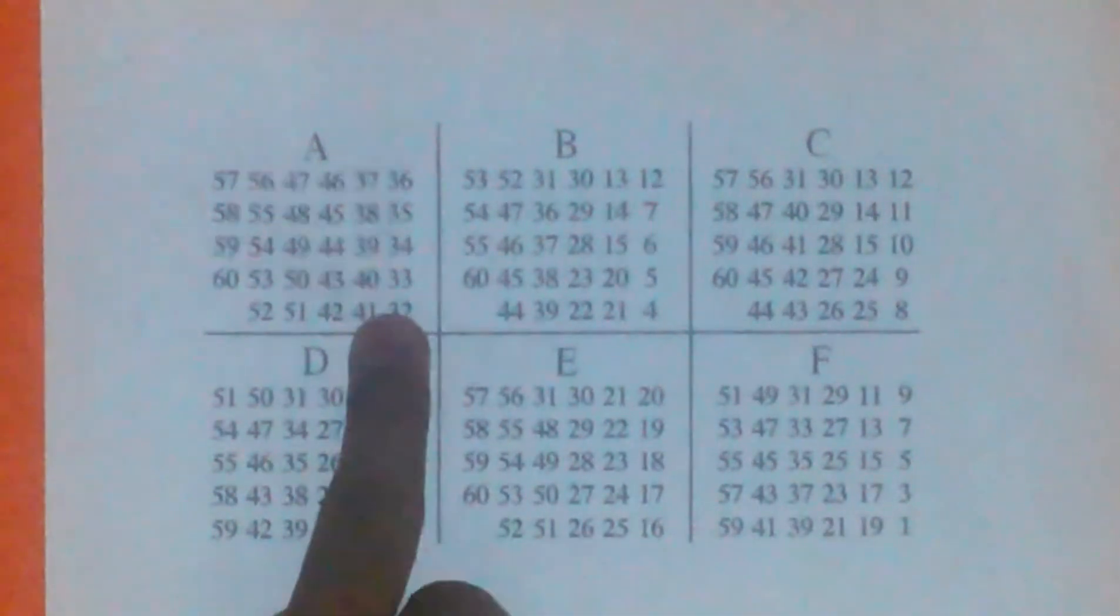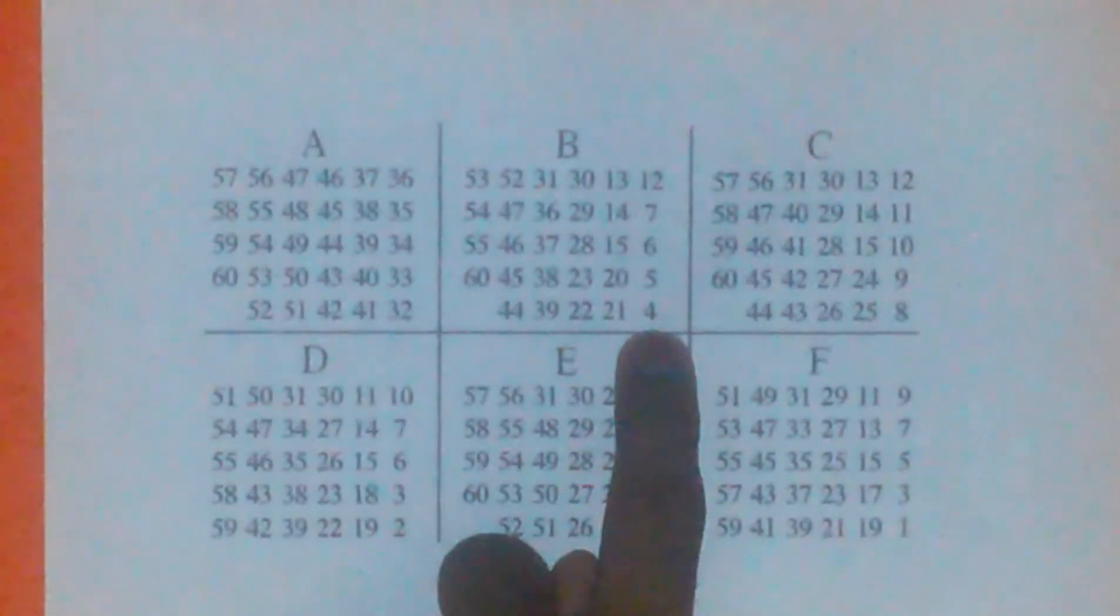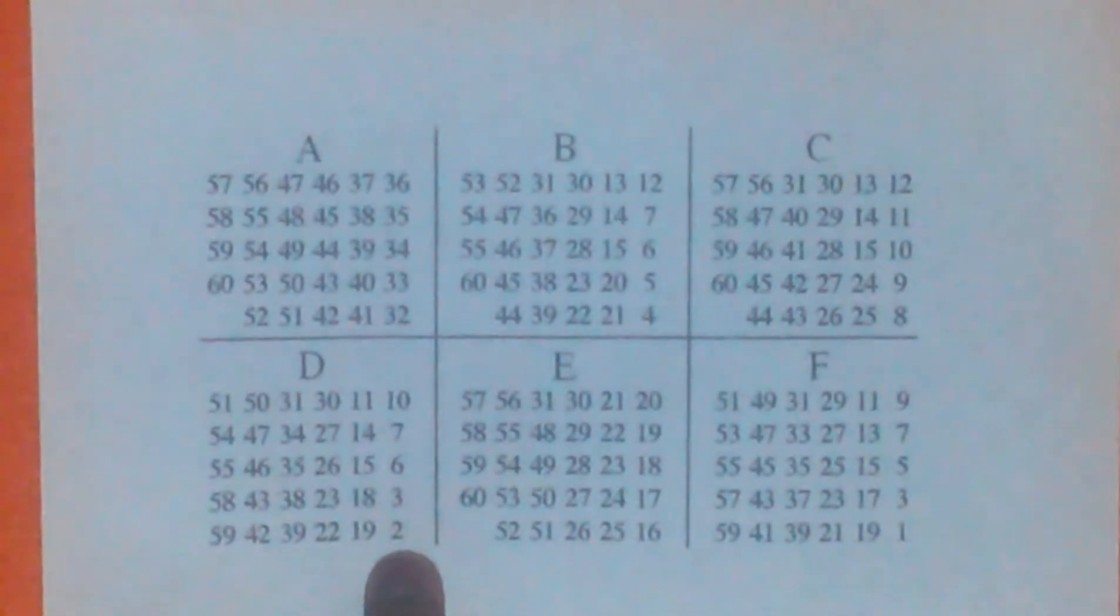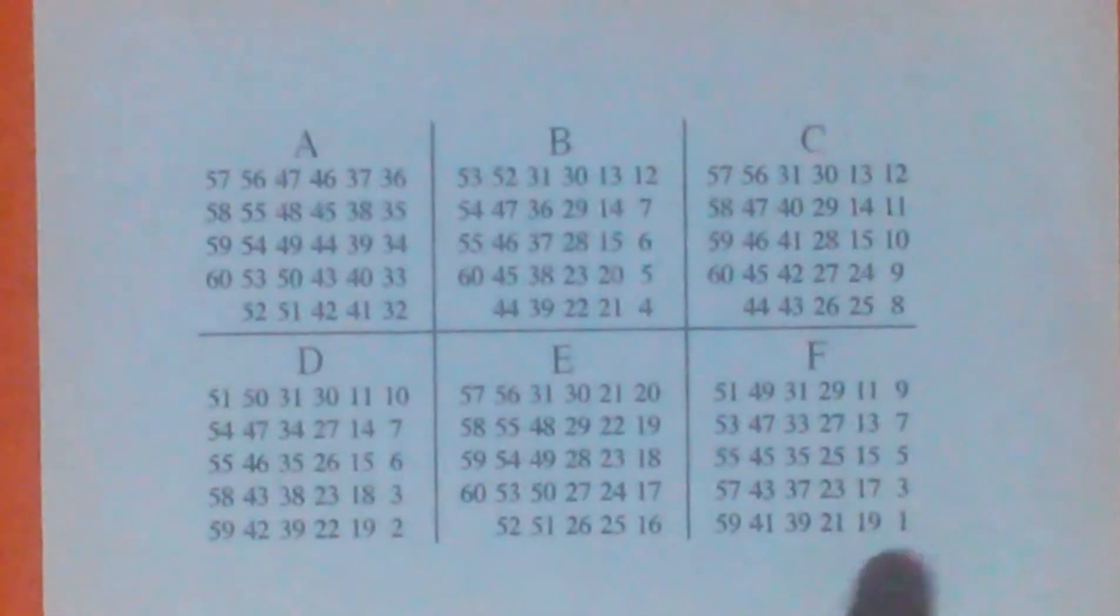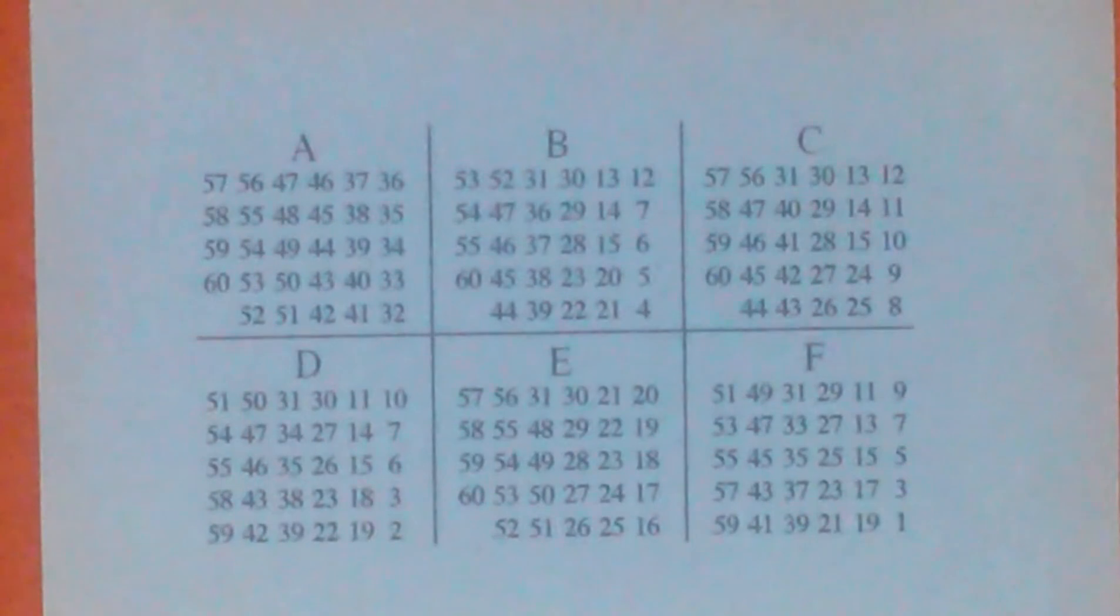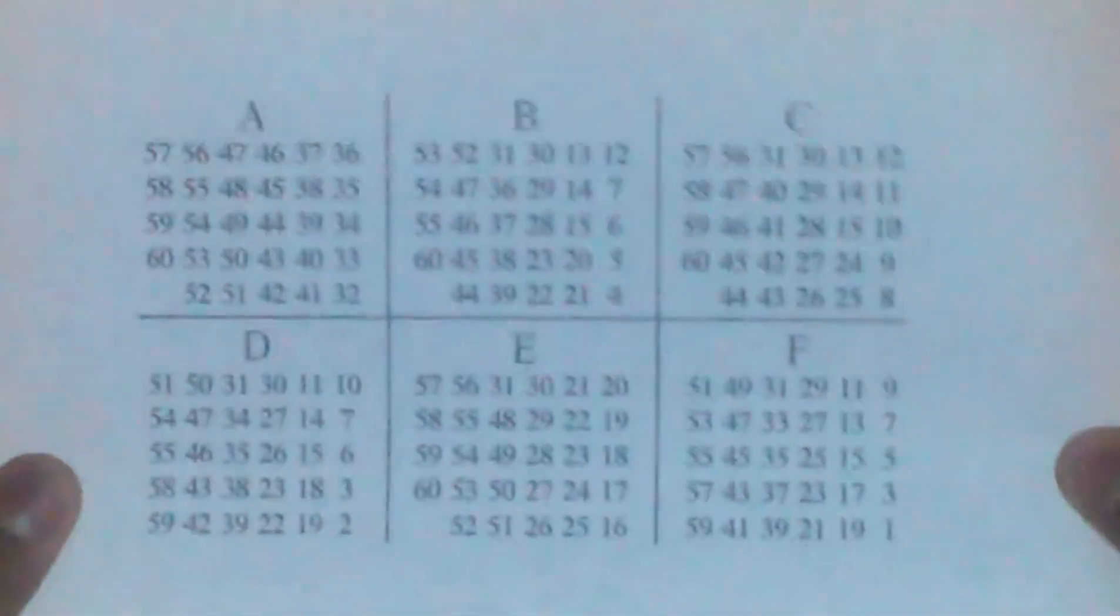All you have to do is just add up this card, 32, plus 4, which is 36, plus 2, which is 38, plus 1, which is 39, and you get your answer. So take up this answer sheet.